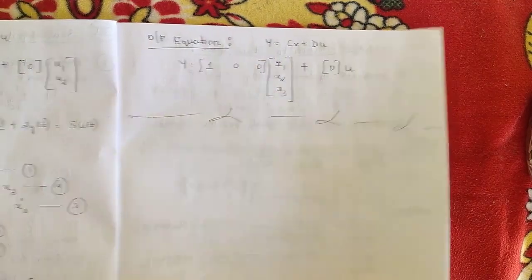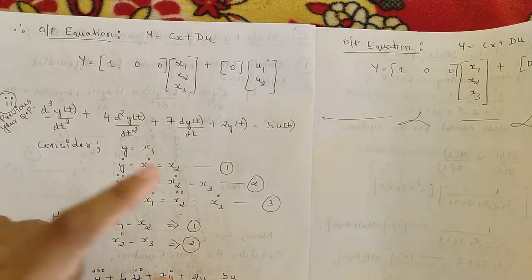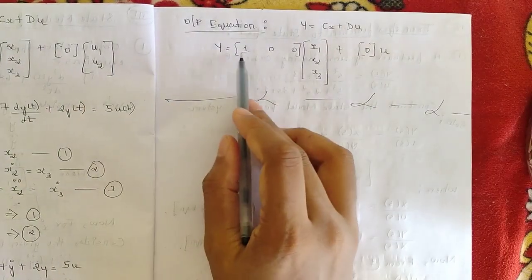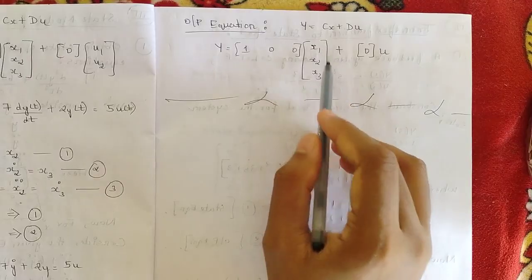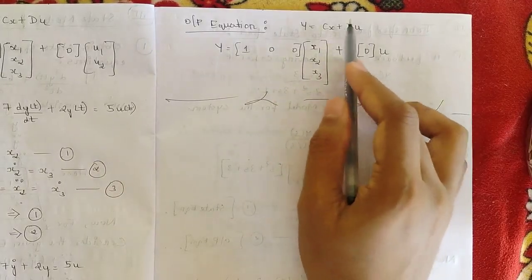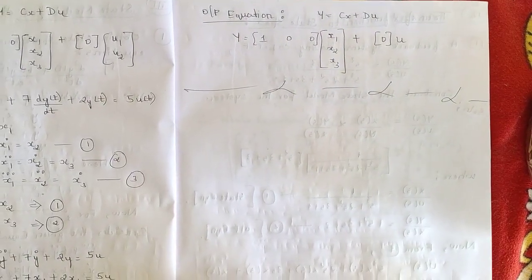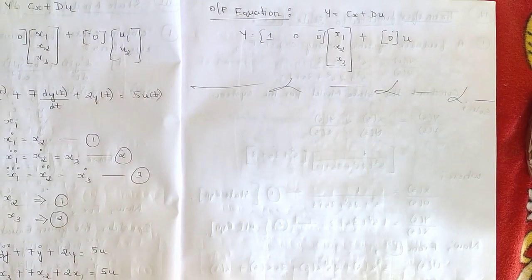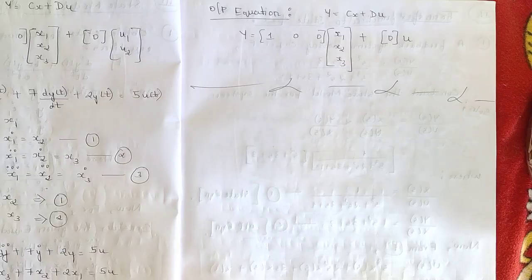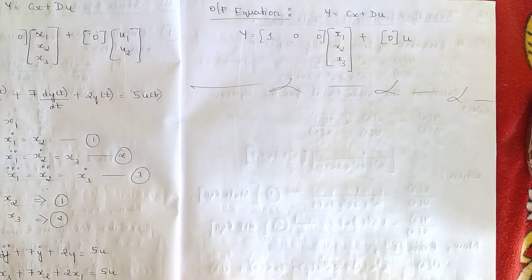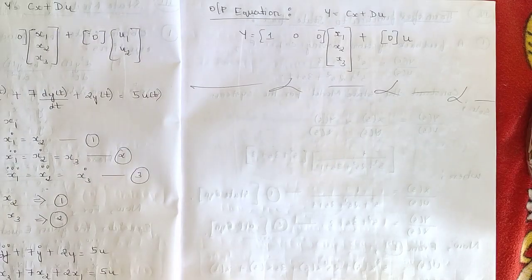The output equation is y = Cx + Du. Since y = x₁, the C matrix is [1, 0, 0] into [x₁, x₂, x₃]ᵀ. The D value is zero since there is no u term in the output equation, so D × u = 0. This is how you solve for the state model from a differential equation. You can expect this for around six marks in the exam. Please like this video, subscribe to the channel, and stay tuned for the next video.